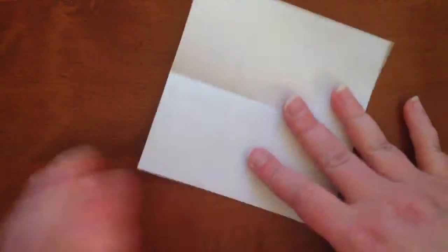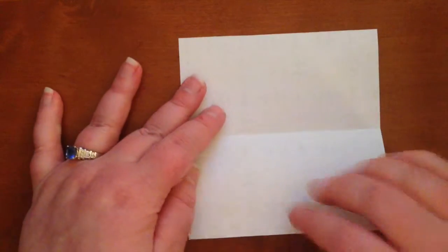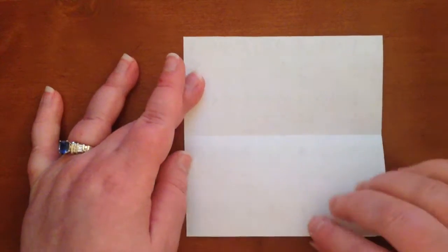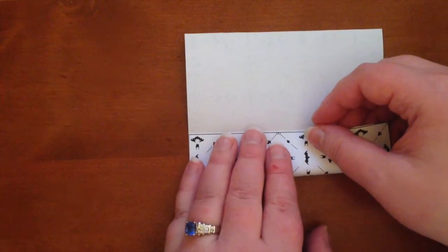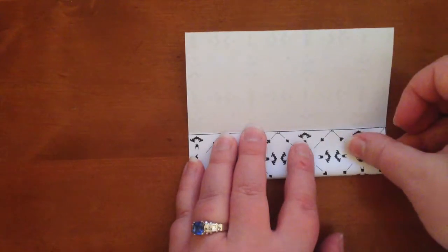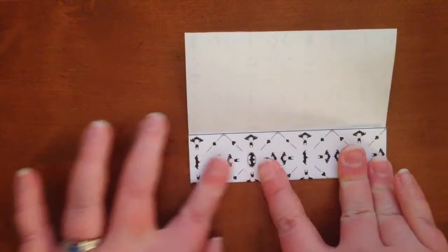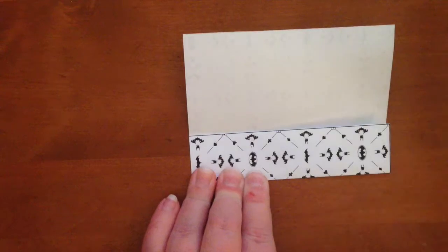Now you're going to flip it over again and unfold it. Notice you have that nice tight crease right there. Now we're going to take the bottom and fold it to meet that middle crease. Not all the way covering it up, just meeting it and saying hello. Again, nice and firm little crease.